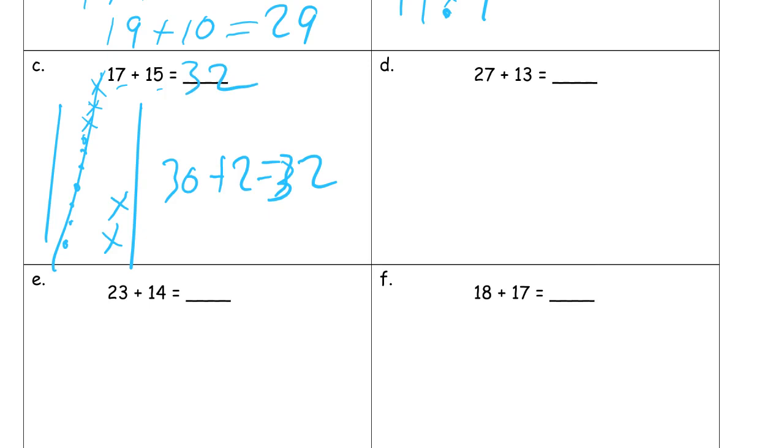27 and 13. This is a good, this would be a good one you can either do with a number bond or arrow way would work really well for this one, because you can see that's 7 and 3 and hopefully you recognize those partners to 10. So why don't I do this? 27 plus the 3, 30 plus the 10, 40. There.